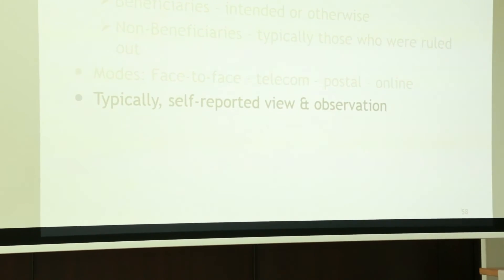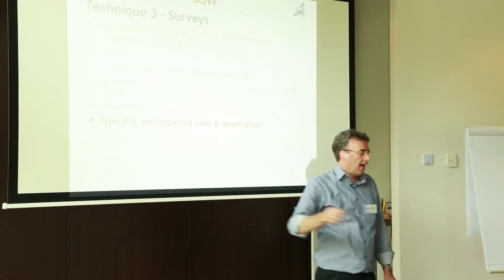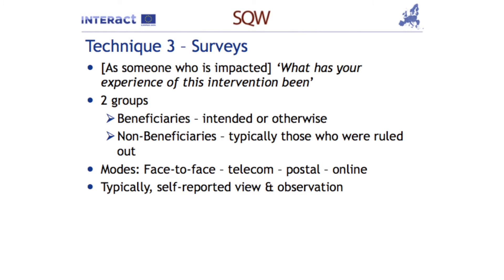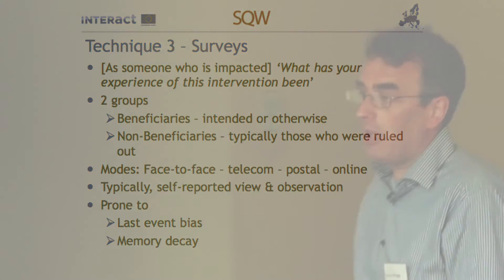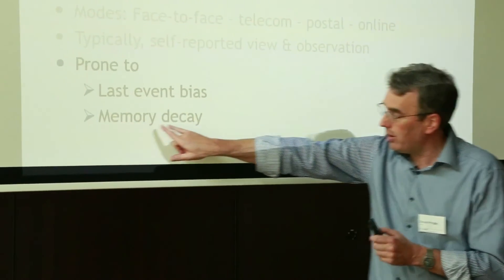When doing these surveys, what you are looking for is a self-reported view and set of observations from the respondent about what their programme experience has been. The difficulty with surveys is they are very prone to what I call last event bias. If you have had a particularly good encounter with a beneficiary and you then survey them, you will probably get quite a positive response. And if you have just had a bad row with them, or not paid them some money, or treated them a bit roughly, they are going to give you a bad survey response. Survey respondents tend not to be very rational — they tend to remember you as they last interacted with you.